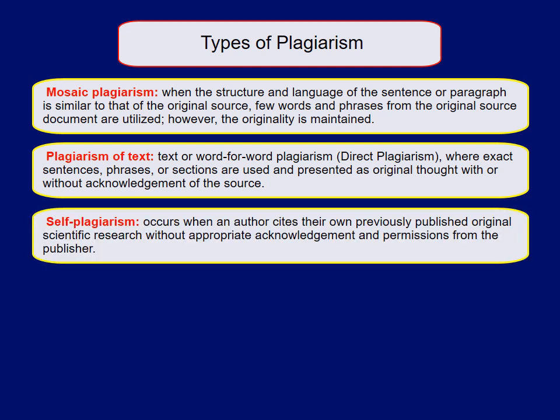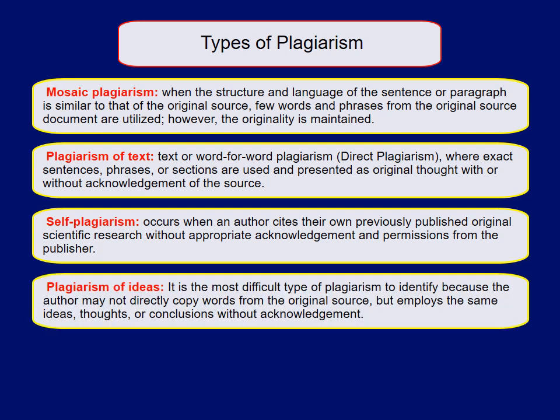The third type is self-plagiarism, which occurs when an author cites their own previously published scientific research without appropriate acknowledgement and permission from the publisher. The published work has different copyrights — one related to the author and the other to the publisher — so even the author cannot re-quote from their original previous work without the publisher's permission. These three types of plagiarism can be detected by software such as Turnitin.